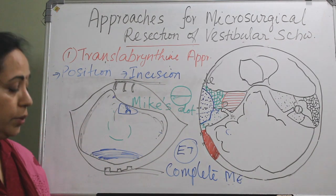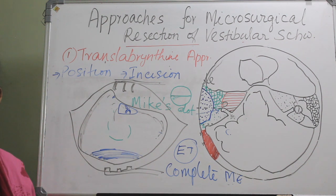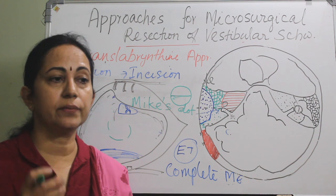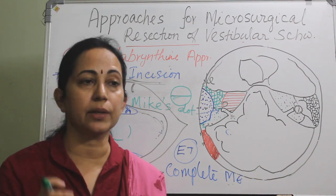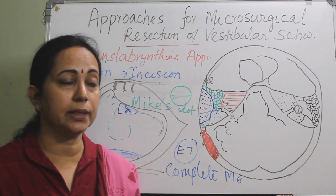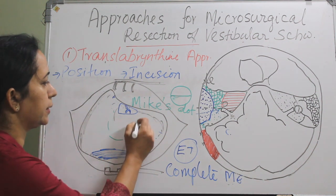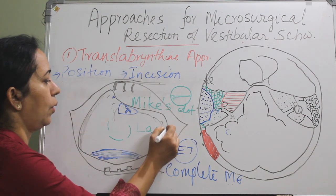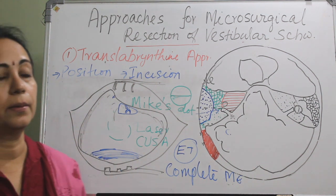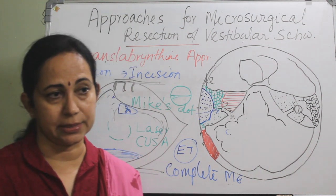Once bone removal is complete, an incision is made in the posterior fossa dura and the tumor is identified. If the tumor is small, it can be removed directly. If the tumor is large, the center has to be gutted using laser evaporation, a CUSA aspirator, or micro cup forceps under microscopic extraction.